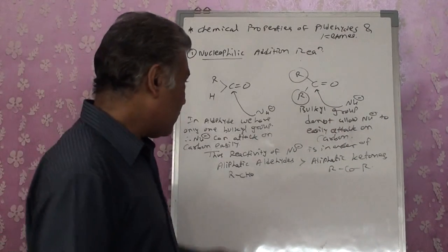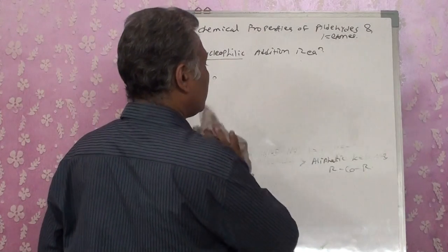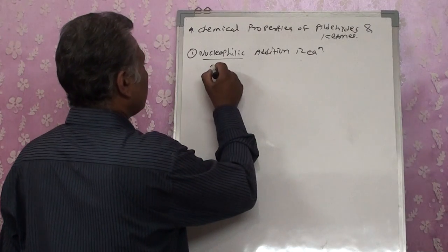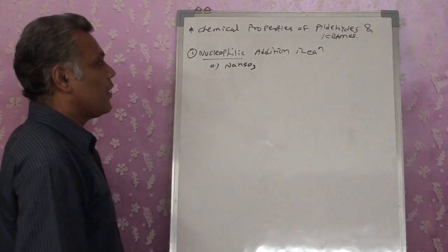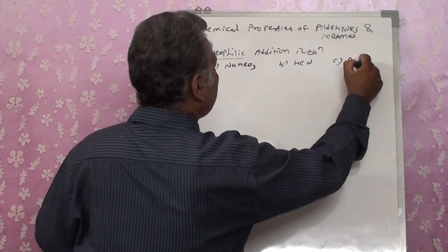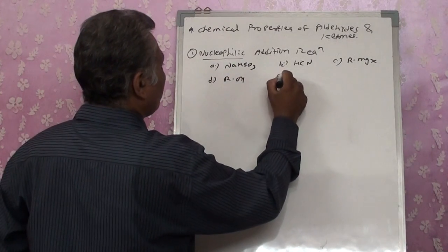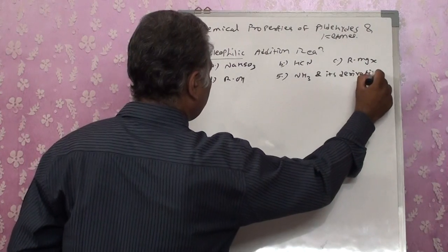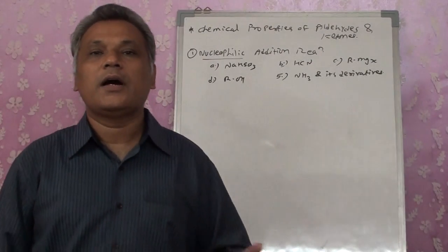Now let us discuss the different types of nucleophilic addition reactions. The five reactions we will study are: first, addition of NaHSO3; second, with HCN; third, with RMgX (Grignard reagent); fourth, with alcohols; and fifth, with ammonia and its derivatives. We will study how each of these five nucleophiles reacts with aldehydes and ketones.